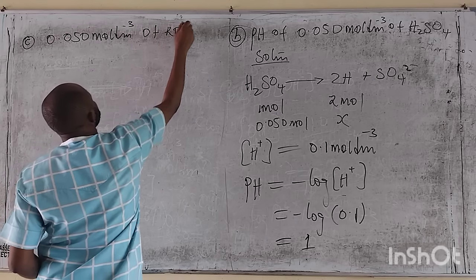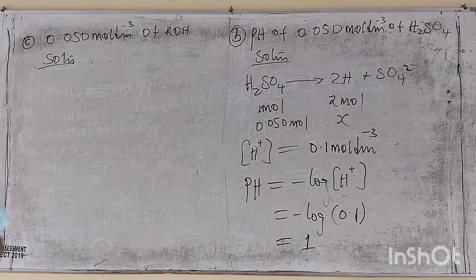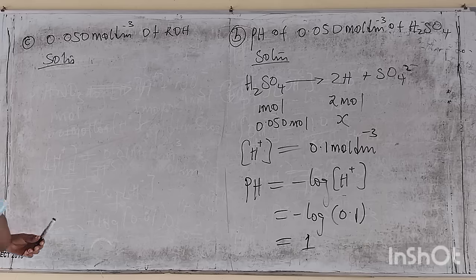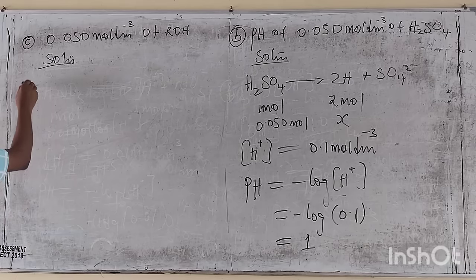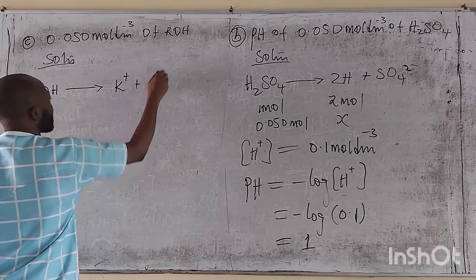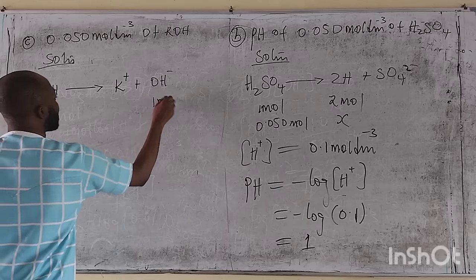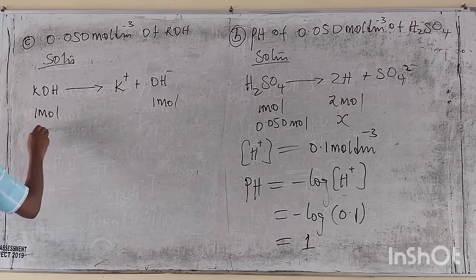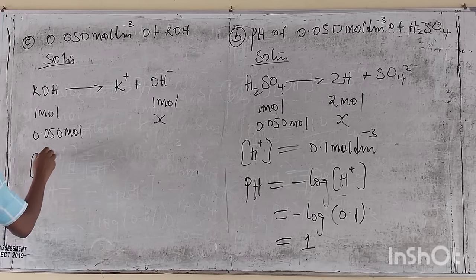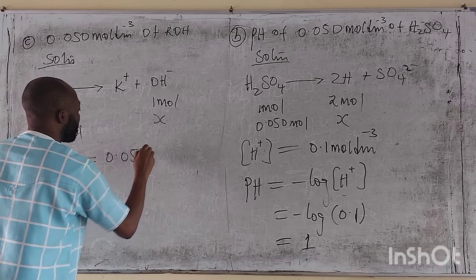We have 0.050 mol/dm³ of potassium hydroxide solution. Potassium hydroxide ionizes to give us potassium plus OH negative. 1 mole of KOH gives 1 mole of OH⁻, so 0.050 moles will give us the hydroxide ion concentration of 0.050 mol per dm³.